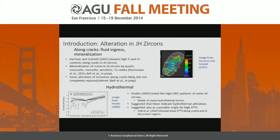Hydrothermally grown or altered zircons often have a characteristic high, flat light rare-earth pattern. This is also true of some of the Jack Hills zircons. Hoskin (2005) proposed this was indicative of hydrothermal alteration in some of the Jack Hills zircons, and it's known that hydrothermal alteration can also affect the oxygen isotope composition of zircons.